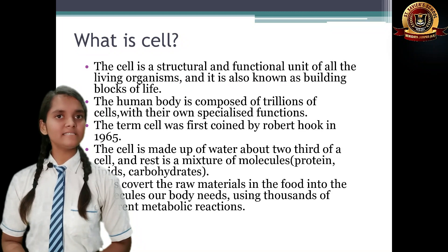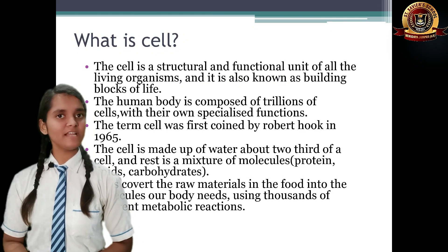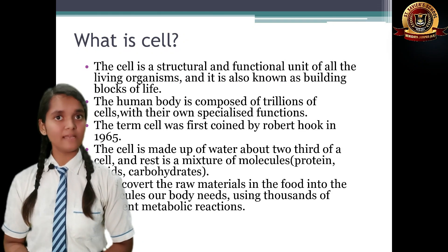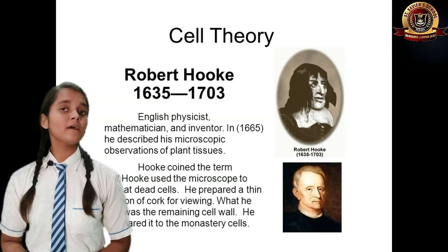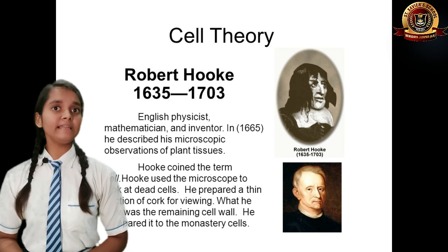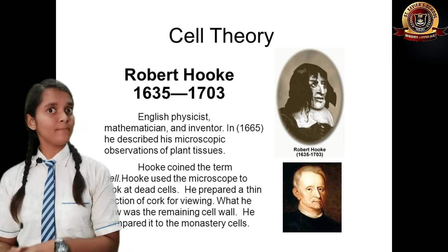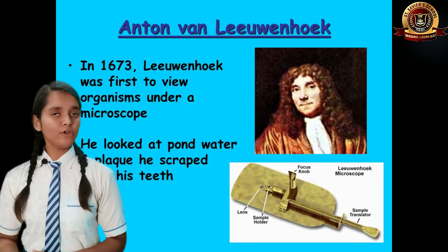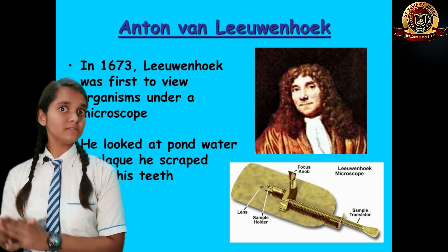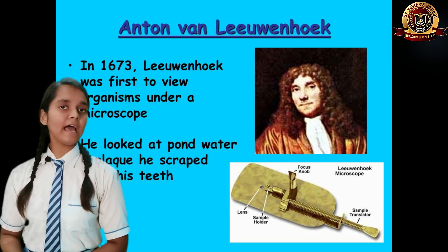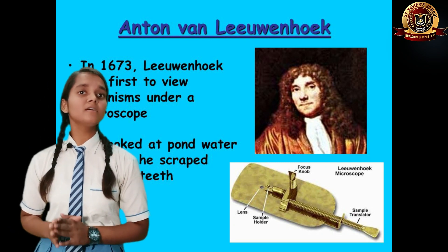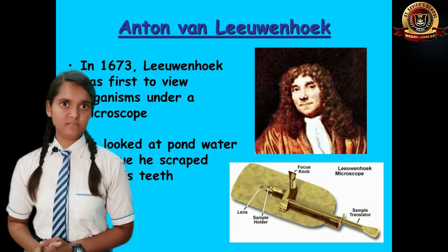What is Cell? Cell is the structural and functional unit of all living organisms. It was first seen by Robert Hooke, but it was a dead cell. It was second seen by Antonie van Leeuwenhoek, which was the living cell. And after that, Robert Brown saw the nucleus.